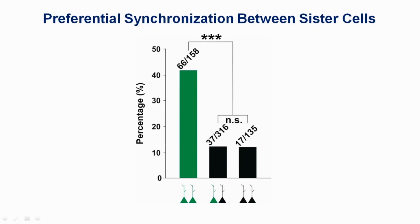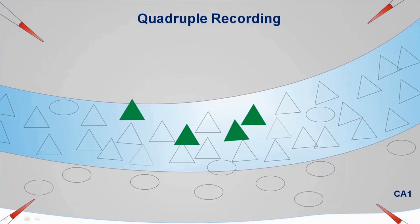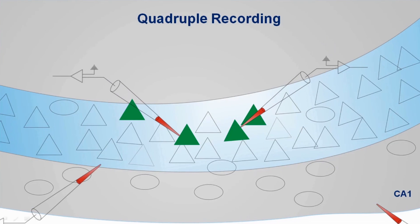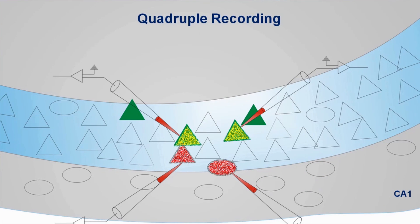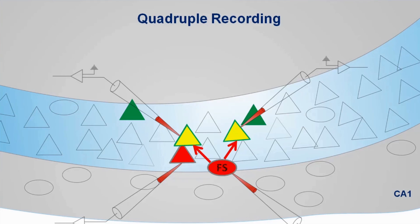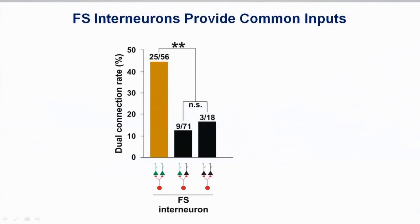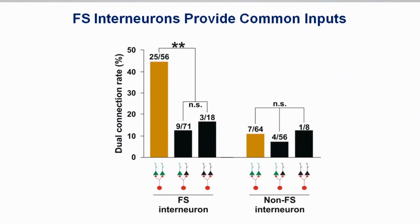To further uncover the underlying circuit basis of this lineage-dependent synchronicity, we performed another set of quadruple whole-cell recordings on two sister pyramidal cells, one nearby non-sister pyramidal cell, as well as one nearby interneuron, and examined the connectivity among them. Remarkably, we found that sister pyramidal cells are more likely co-innervated by nearby interneurons. Moreover, there is strong interneuron subtype specificity — only fast-spiking, but not non-fast-spiking, interneurons effectively provide such common input.